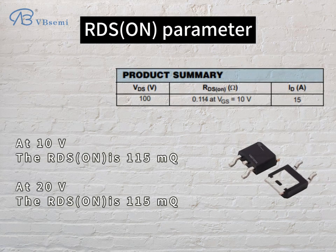For the RDS-ON parameter: at 10V, the RDS-ON is 115mΩ; at 20V, the RDS-ON is also 115mΩ.